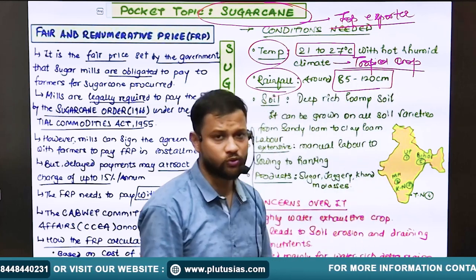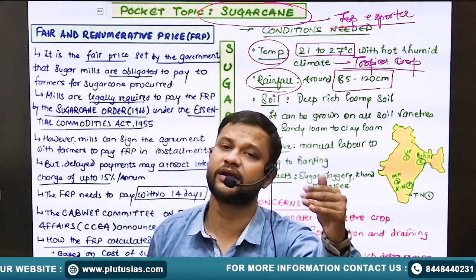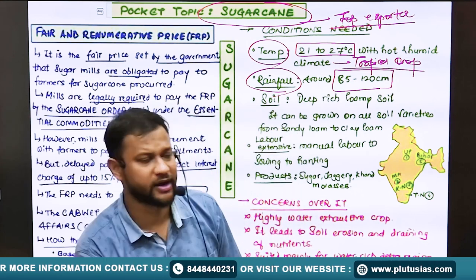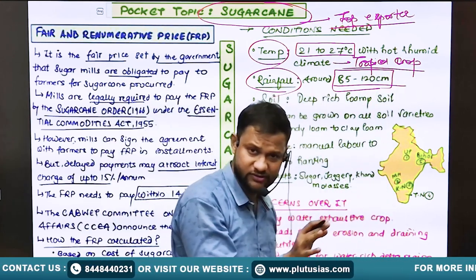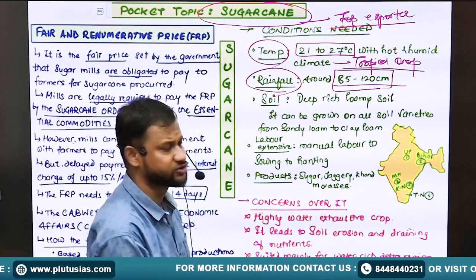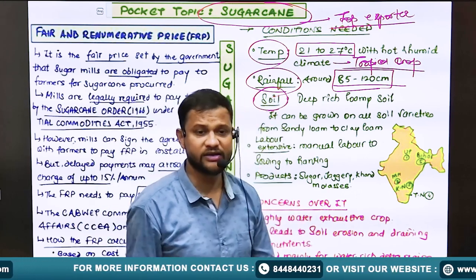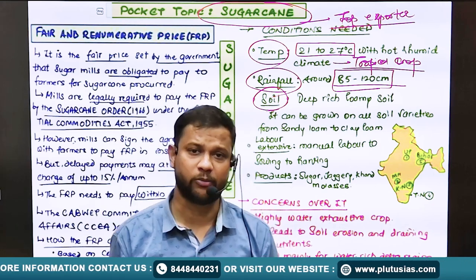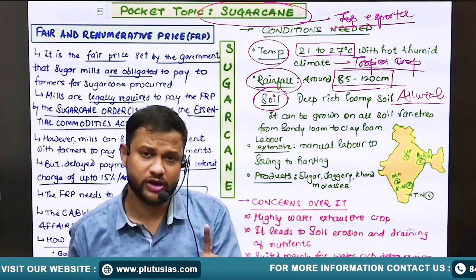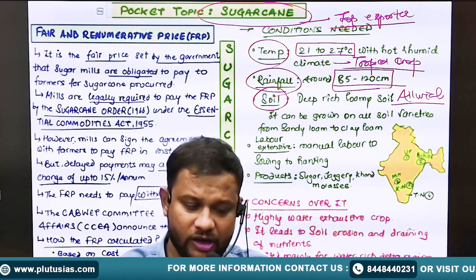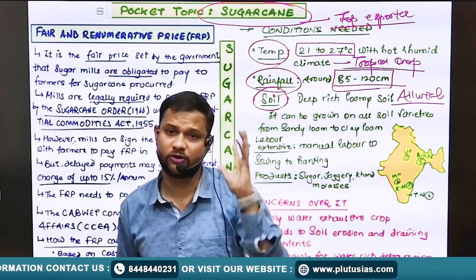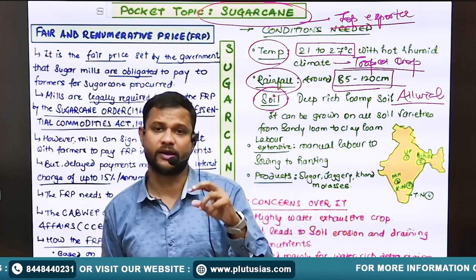In terms of rainfall, sugarcane requires 85 to 120 cm, which is comparatively a higher amount. In rainfed areas you will find low-water-requiring crops that manage with 50 to 70 cm. However, sugarcane requires water in the range similar to rice. Next, the soil requirement is deep, rich loamy soil — more appropriately alluvial soil. So this crop requires high temperature, 85 to 120 cm of rainfall, and rich loamy soil.